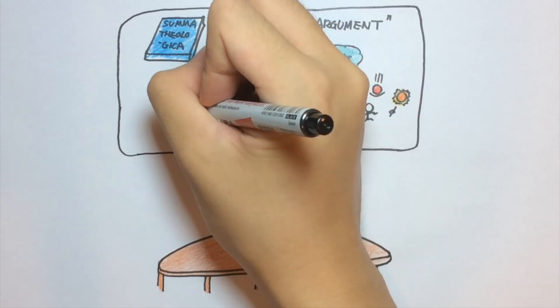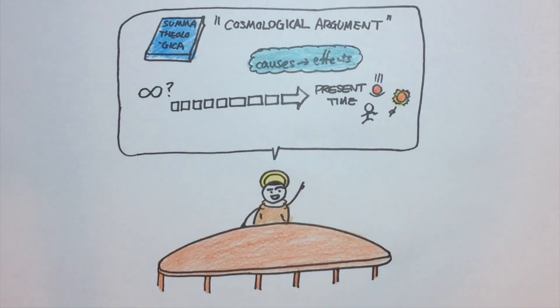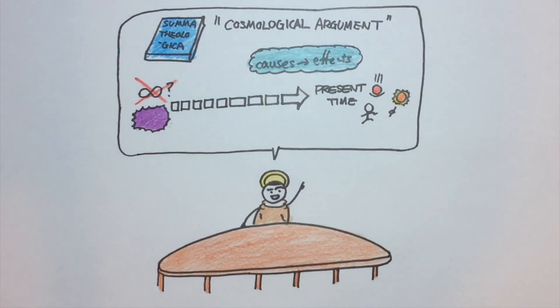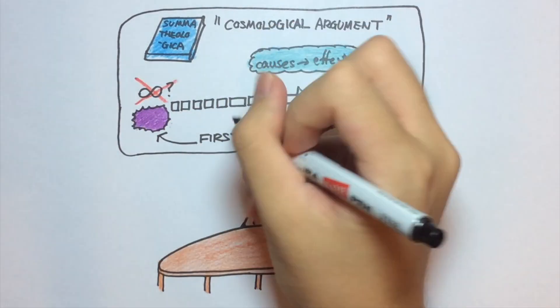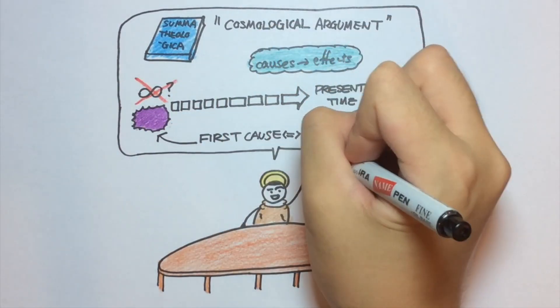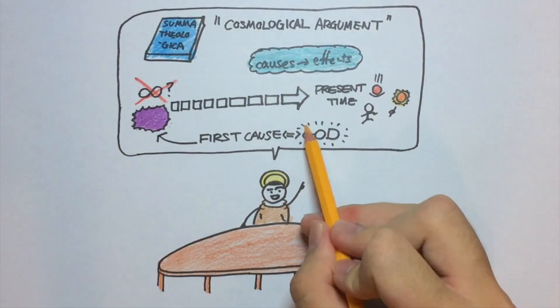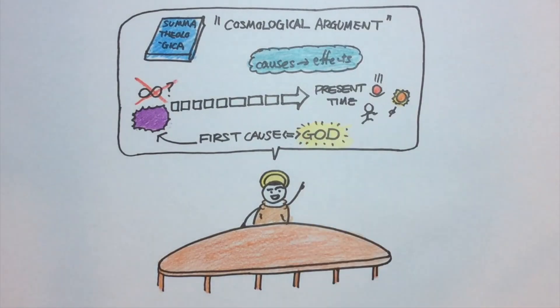However, there cannot be a chain of causes that extend forever into infinity. Something must have begun the chain of events that produce the effects that we see today. That something, which we call the first cause, did not need to have been caused, and would have been extremely powerful. The first cause, by definition, is likely to have been God.